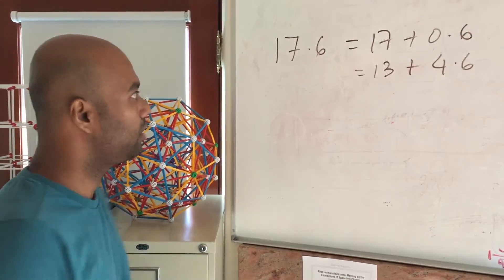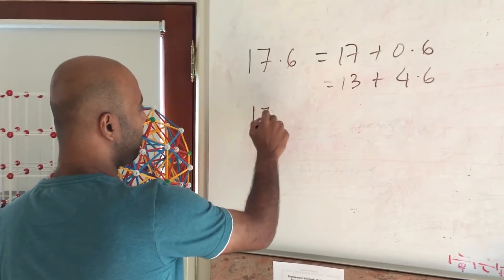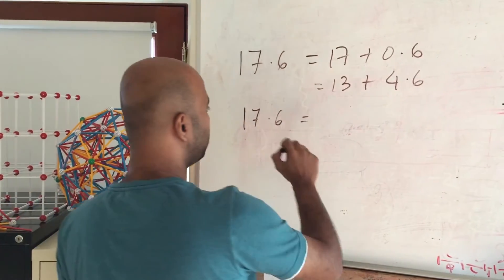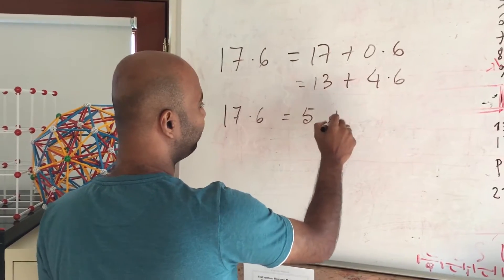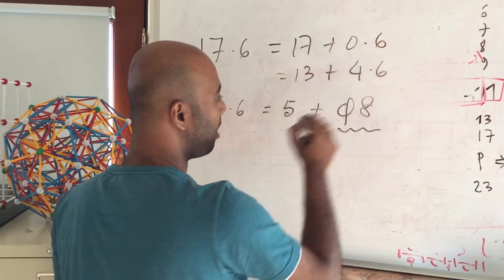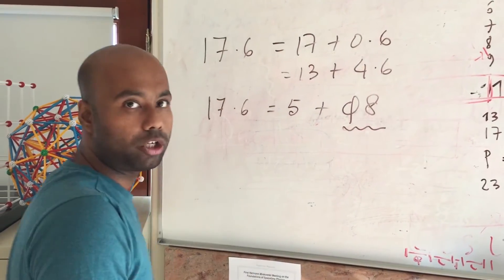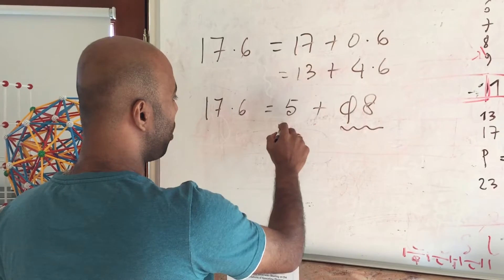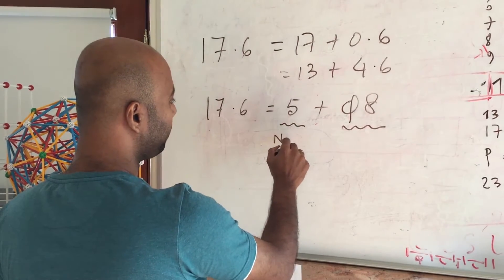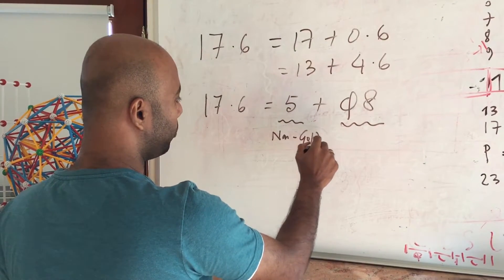In the golden decomposition, what we do is we divide this number into what is called a golden part, which is this part associated with the golden ratio, and a non-golden part which is not associated with the golden ratio.